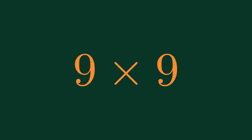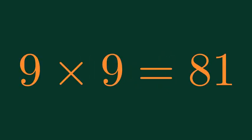9 times 9 is equal to 62. What is 9 times 9? 9 times 9 is equal to 81. 9 times 9 is equal to 81.